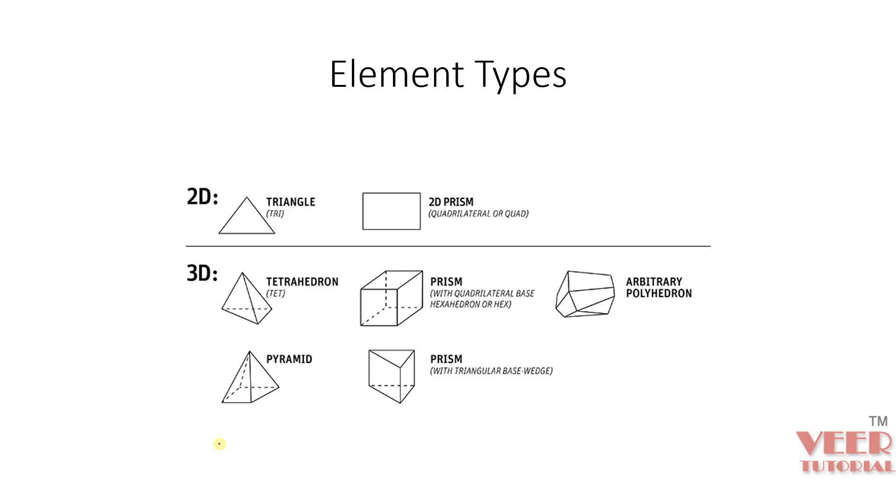Now let's understand about them one by one and how to choose the different types of elements in the analysis. Here we can see we have 2D, 3D, and also we have 1D elements. So in case of 1D elements, we have elements like bar, beam, and whenever we create any rod or any bolt connection. In case of 1D elements, we have elements like a straight line with two nodes. So 1D element is made of two nodes.